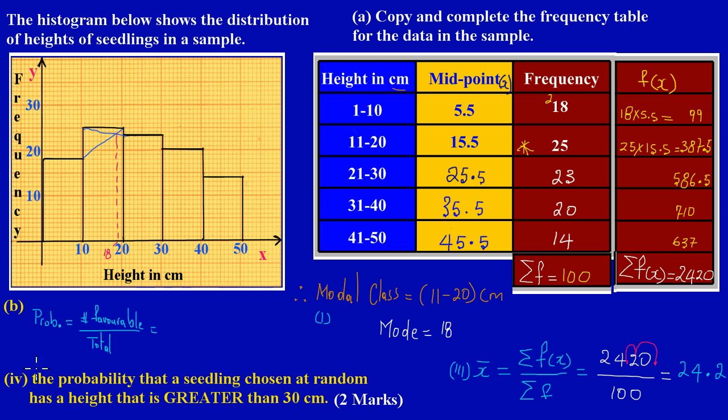So now basically if they're asking us for the probability that a seedling chosen at random has a height greater than 30 centimeters, this is pretty easy my friends. You can do one of two things: you can look on your table and identify the seedlings that would fall in the category or region that would be above 30. If you notice here we would have the class 31 to 40.